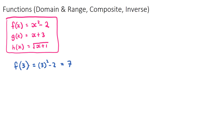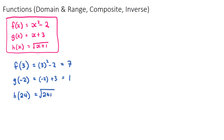If I had g(-2), I find the g(x) function and replace x with -2. So g(-2) = -2 + 3 = 1. And finally, h(24): I find the h(x) function and substitute 24 for x, giving √(24 + 1) = √25 = 5. So to find f, g, or h of some number, you just find that function and substitute it in.